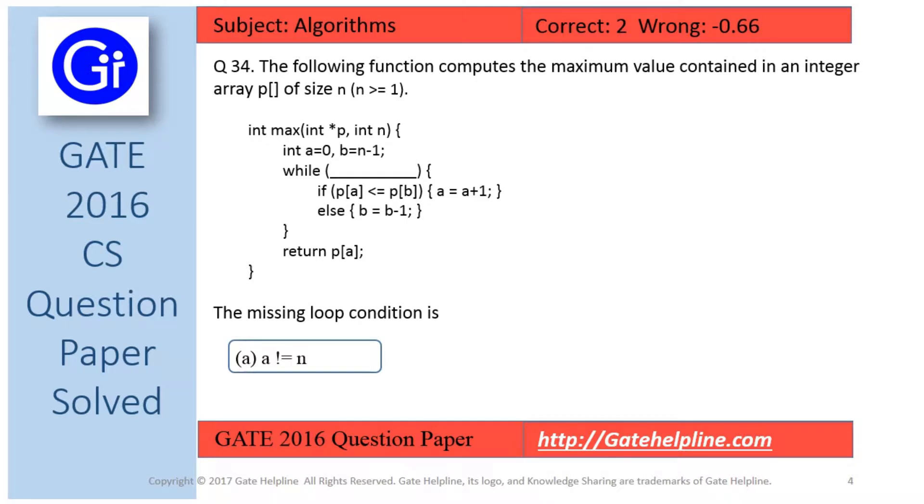The options are: a) a not equals to n, b) b not equals to 0, c) b is greater than a plus 1, and d) b not equals to a.